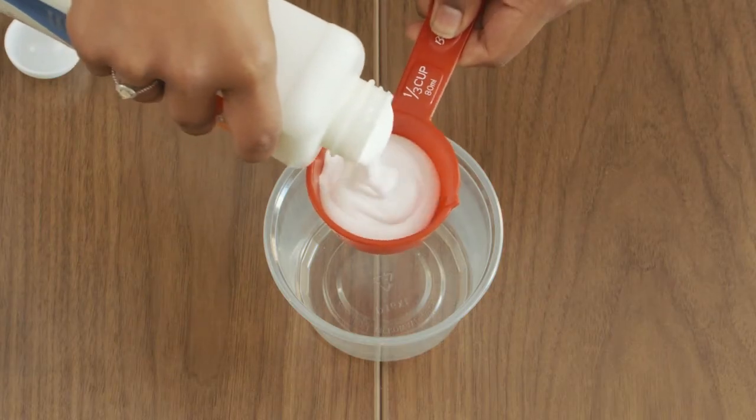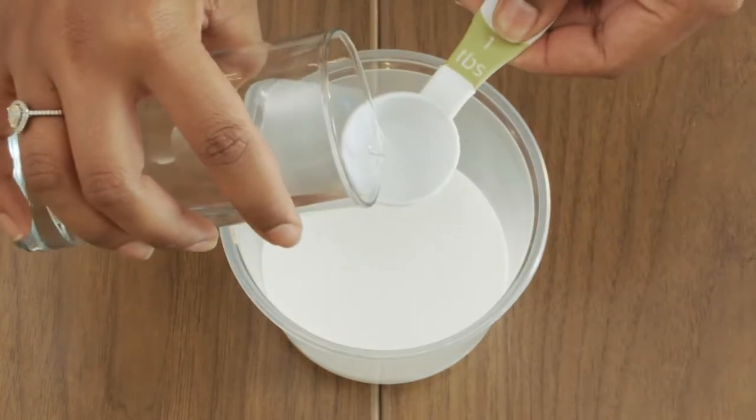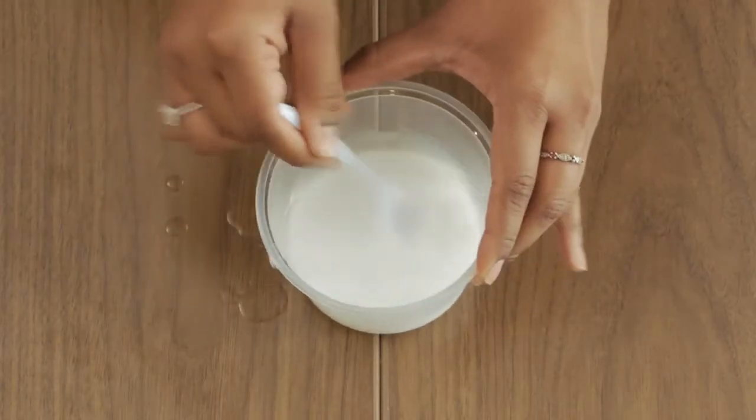Pour white glue, one third cup, into a plastic container. Add four tablespoons of water to the glue and stir thoroughly.